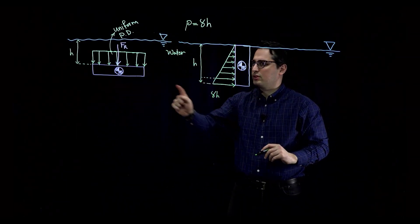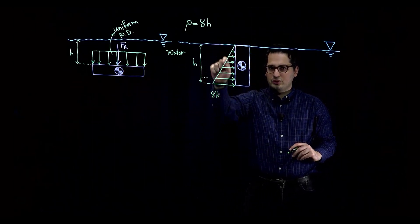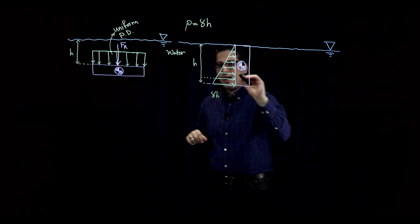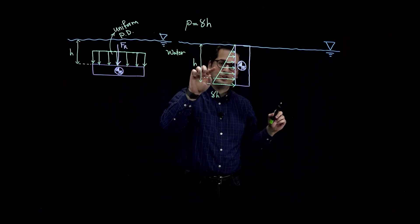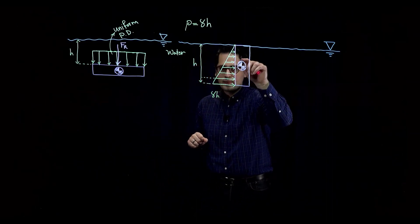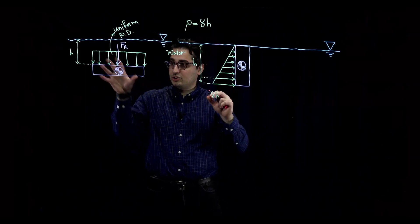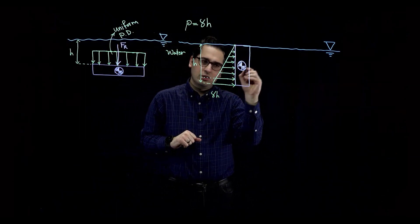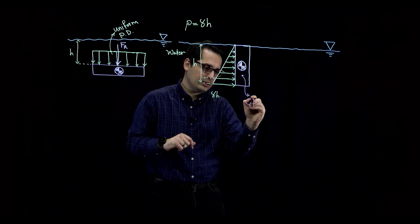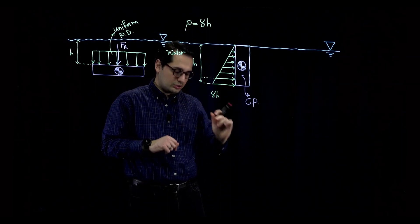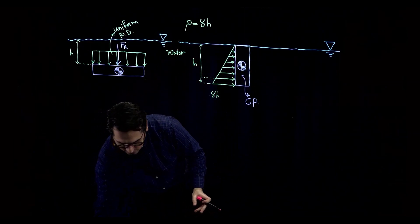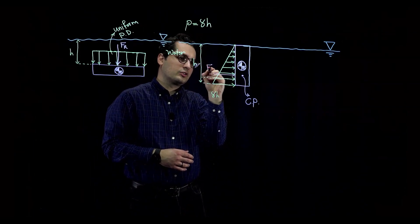Compare this triangular pressure distribution with the uniform one. This is obviously not uniform — as you go deeper in water, the pressure increases. So the resultant force is not going to act at the centroid of this shape. It's going to act at another point we call the center of pressure, or C.P. The resultant force acts at the center of pressure, which is below the centroid.